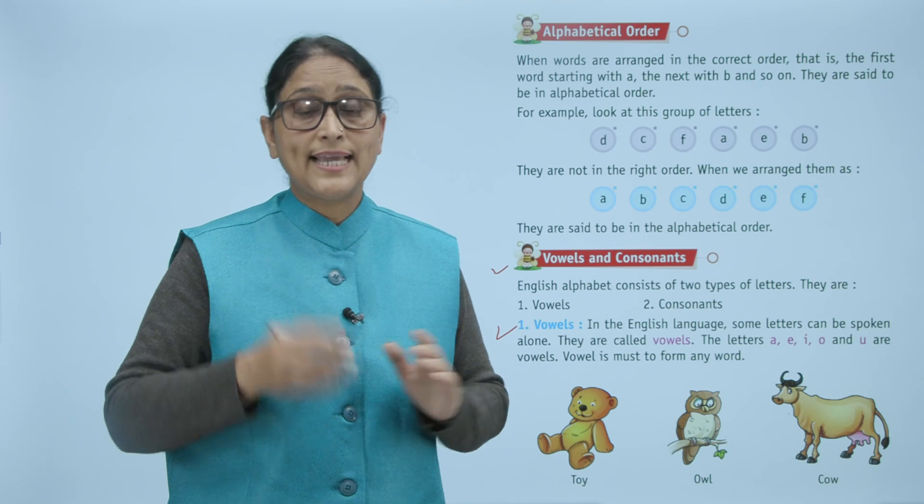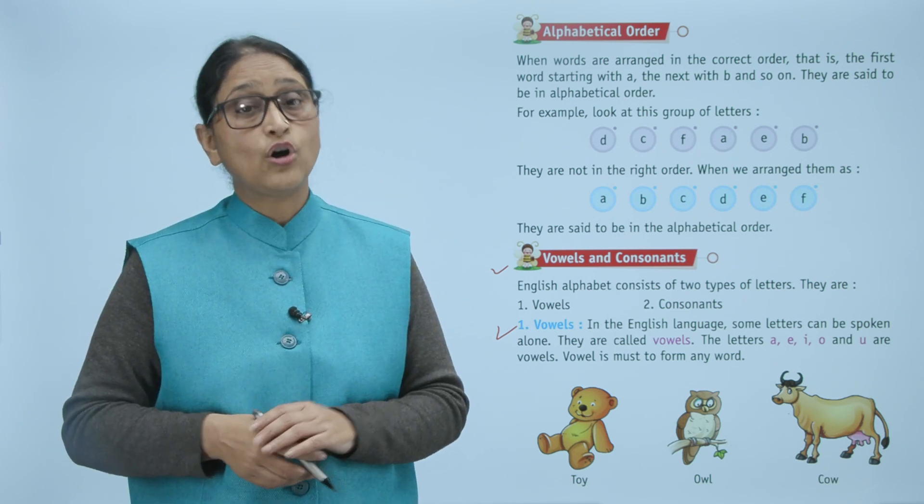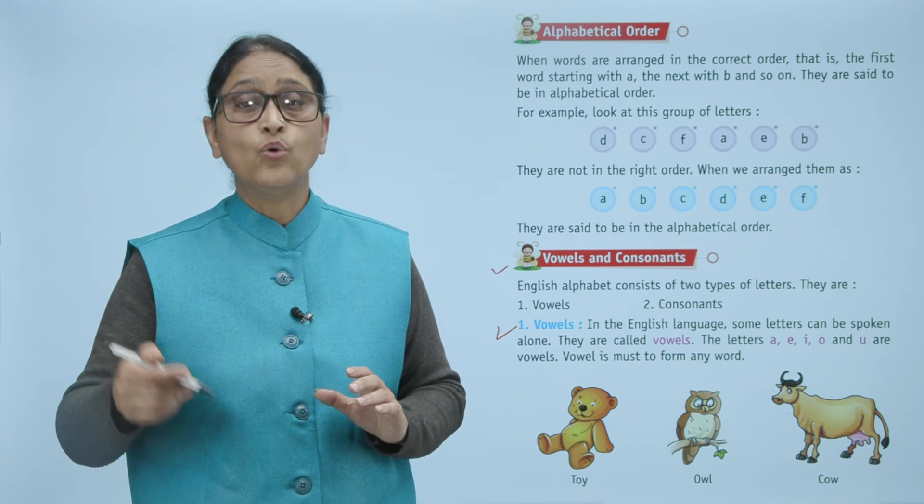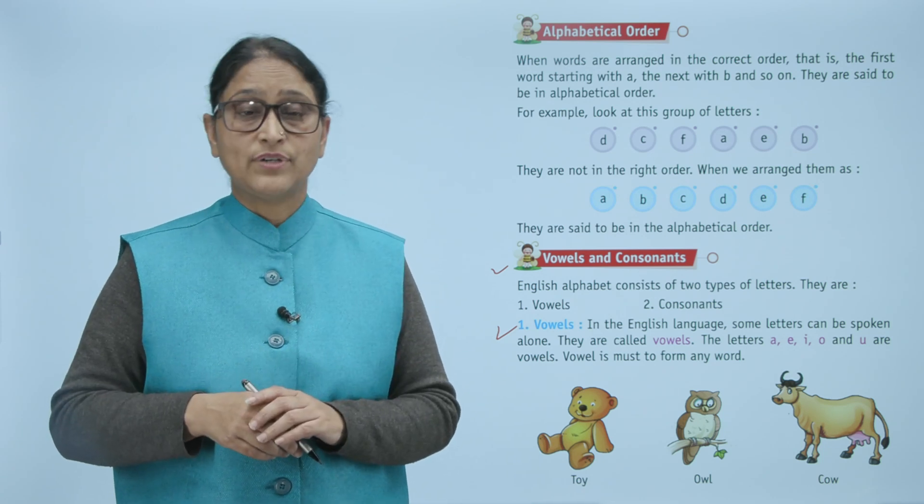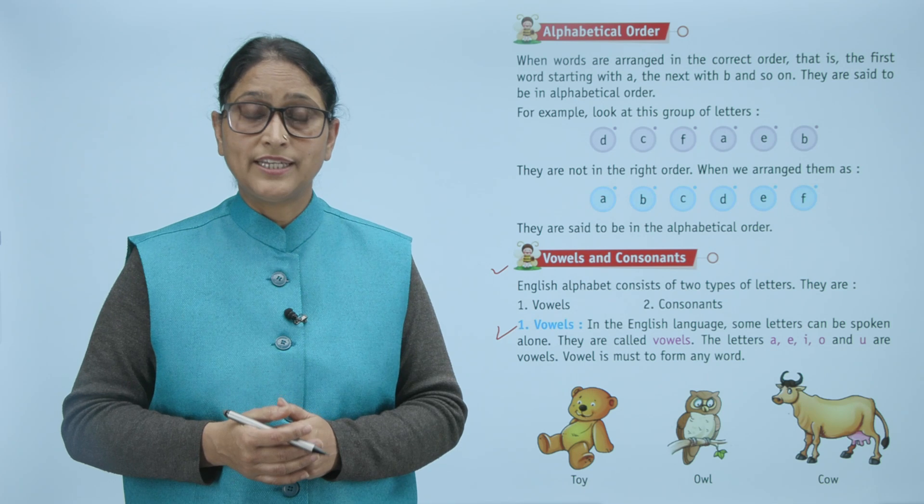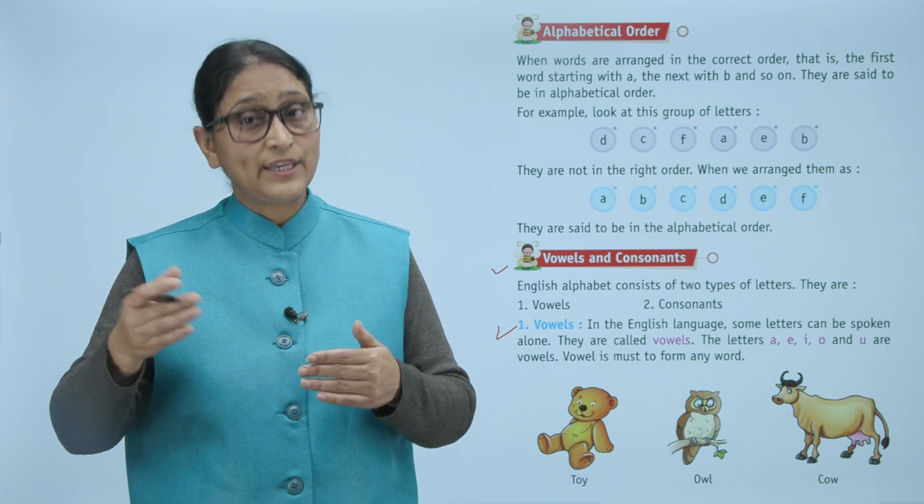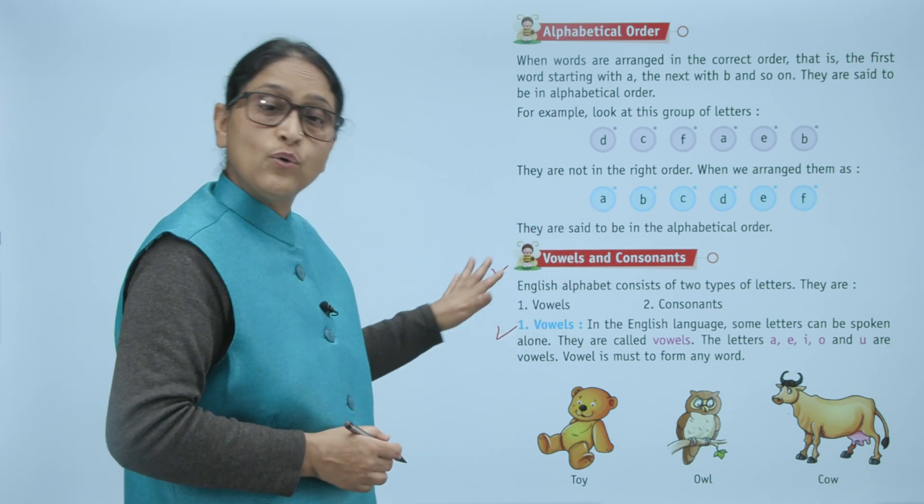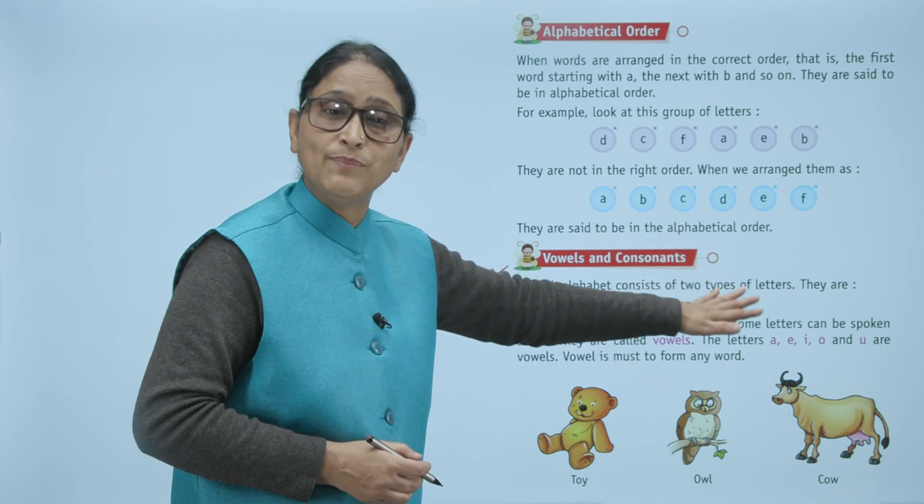In the English language, some letters can be spoken alone. They are called vowels. The letters A, E, I, O, and U are vowels. Vowels are necessary to form any word. Examples: toy, owl, cow.